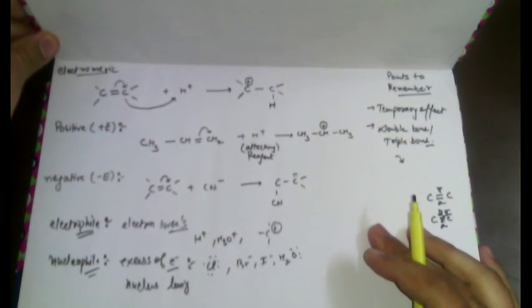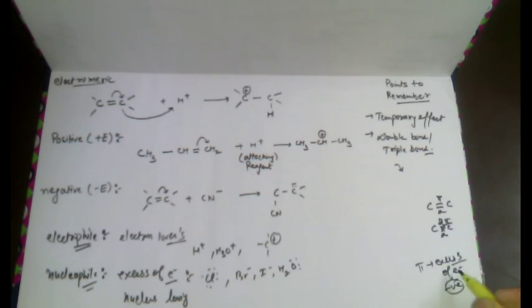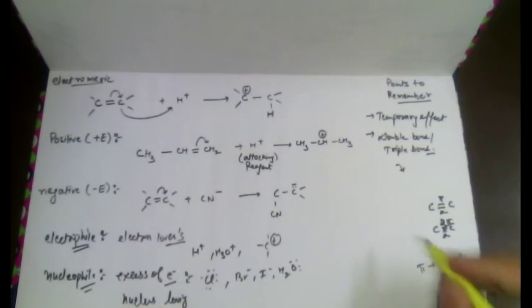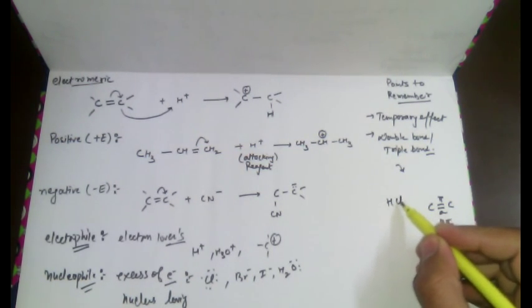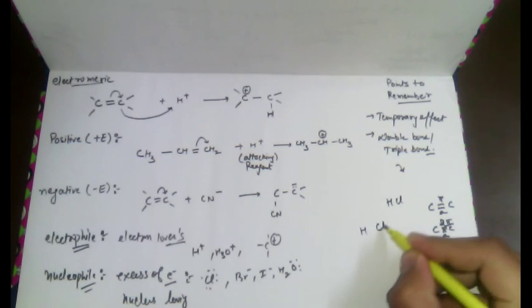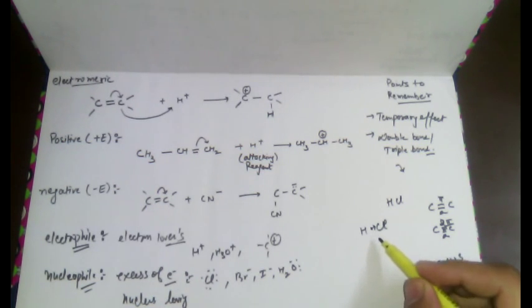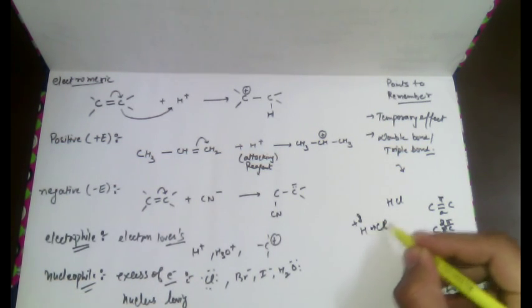Pi bonds are nothing but an excess of electrons, and these excess electrons carry a negative charge. These excess electrons get attracted by the positive electrophile. To understand how an electrophile and nucleophile are formed, consider HCl: hydrogen has lower electron affinity while chlorine has higher electron affinity, so chlorine holds more strongly onto the shared electrons.